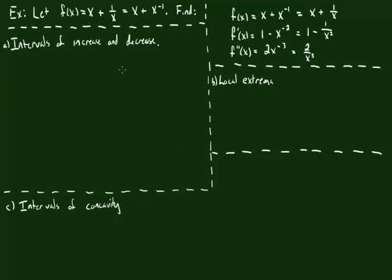To find the intervals of increase and decrease, the first things I need to look for are the critical points. We want to look for all of the places where the derivative is equal to 0, and all of the places where the derivative does not exist.